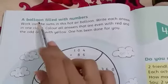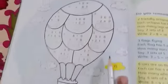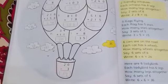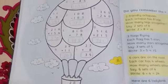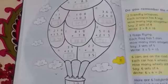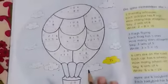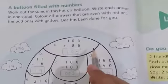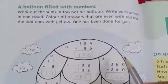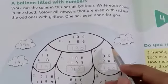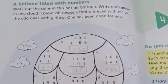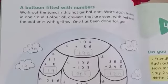And our topic is a balloon filled with numbers. Page number 52 has a hot air balloon. So let's start our work. Students, we have been given an activity. We need to fill this activity and explain how we will do it.